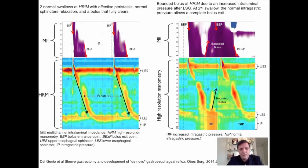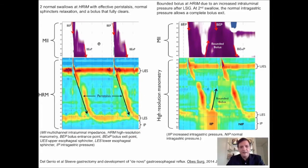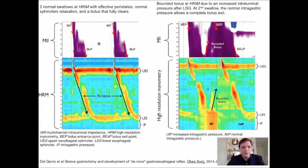Let's focus on the one that says HRM — high resolution manometry — the ones that you can see colors coming from blue to red. This graph on the left side is a pre-op situation. We can see two main horizontal bars.